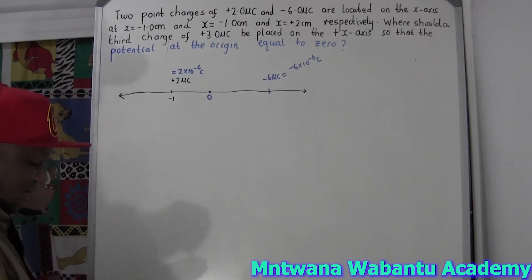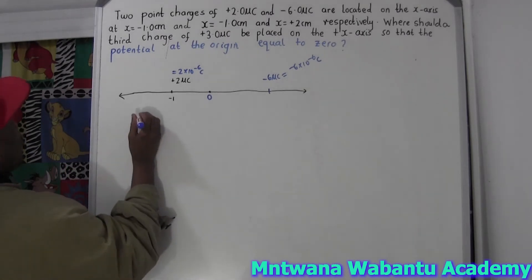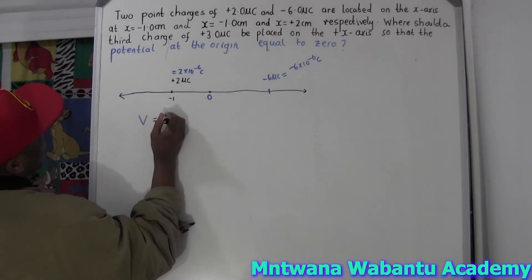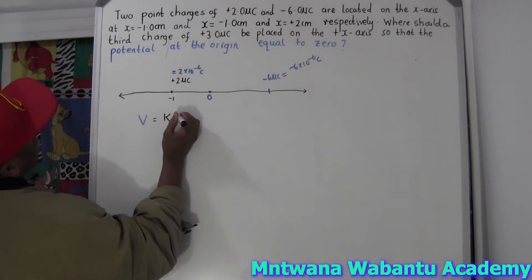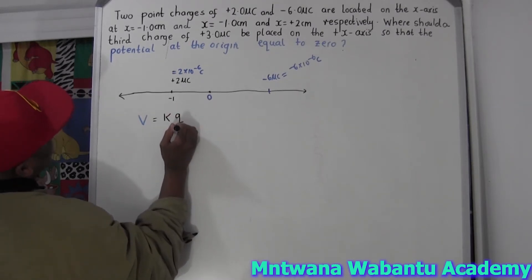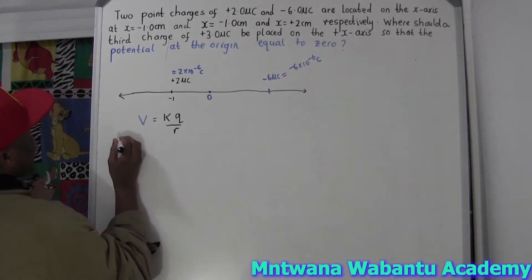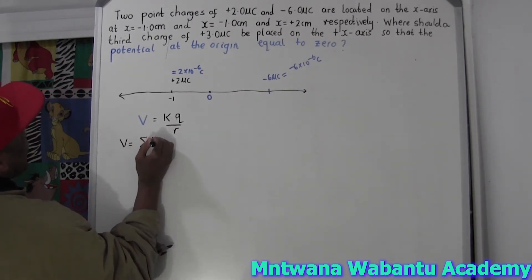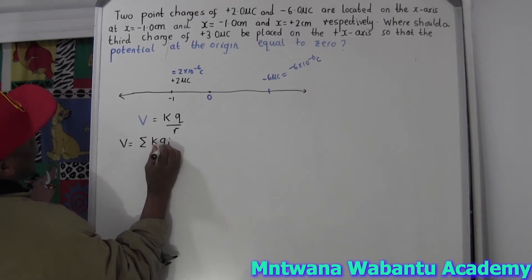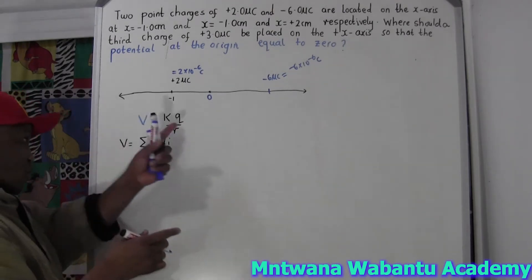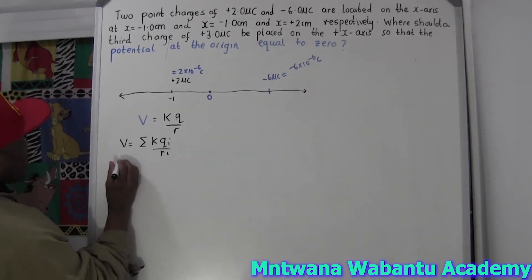I'm going to use the formula for electric potential: V equals k times Q over r. But remember, there are multiple charges here, so we use the sum — V equals the sum of k times Q_i over r_i. For now we have three charges: positive two, negative six, and the one we don't know yet.